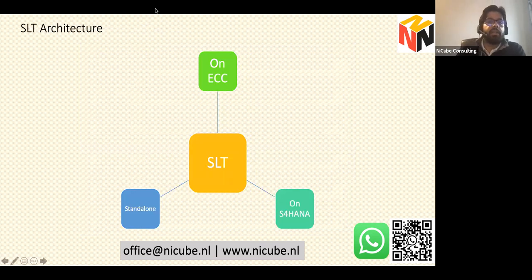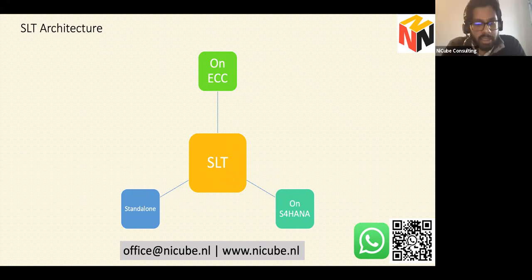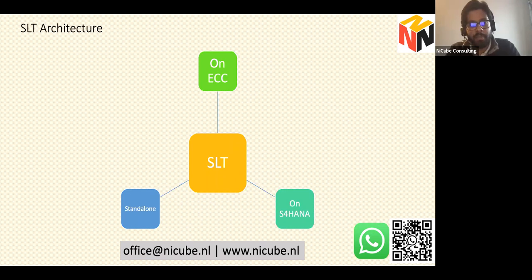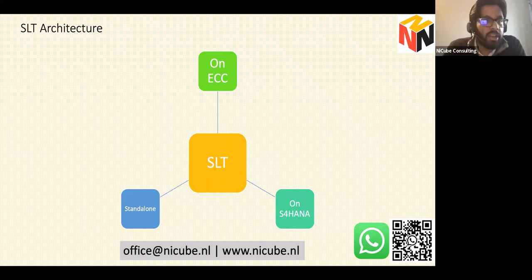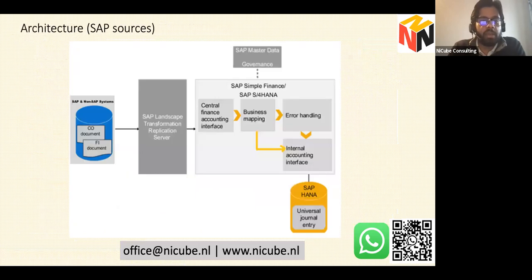For SLT architecture, SAP gives three options: install SLT on ECC, on S4HANA, or as a standalone system. The choice depends on standard CFIN requirements and future upgrade planning. If SLT sits on ECC and ECC gets old, SLT must be upgraded. If SLT is on S4, each S4 upgrade may impact source connections. A standalone SLT has its own cost. Technical, commercial, and change management factors must all be considered. Recommendation: never install SLT on ECC; prefer standalone or S4HANA-embedded.